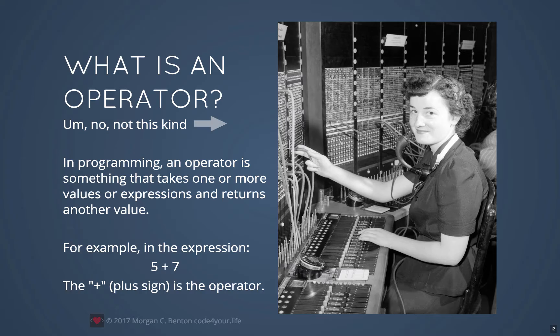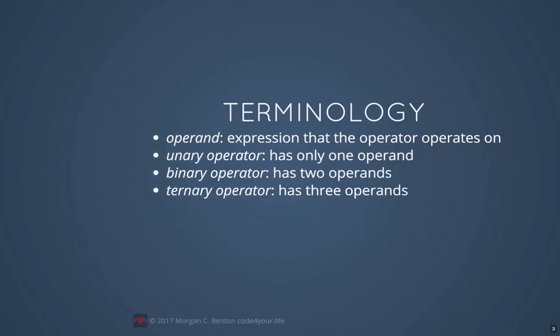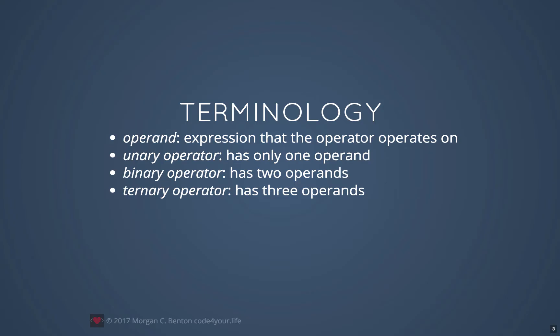For example, in the expression 5 plus 7, the plus sign is the operator. Operand refers to the expression that the operator operates on. So for example, 5 plus 7 — the 5 and 7 are the operands, where the plus sign is the operator.